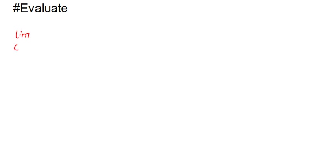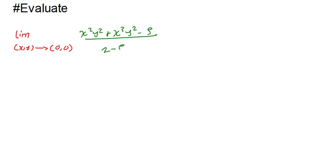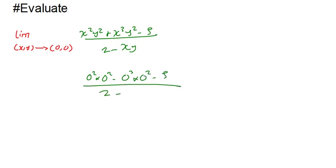Now let's evaluate the limit as (x, y) → (0, 0) of (x²y² + x³y² − 5)/(2 − xy). Direct substitution gives (0 + 0 − 5)/(2 − 0) = −5/2, which is −2.5. No indeterminate form here, so the answer is simply −5/2.